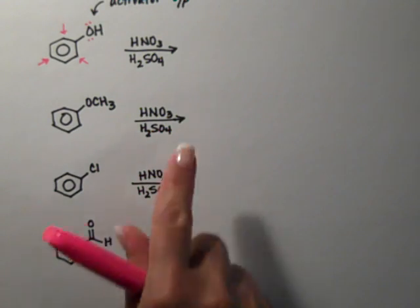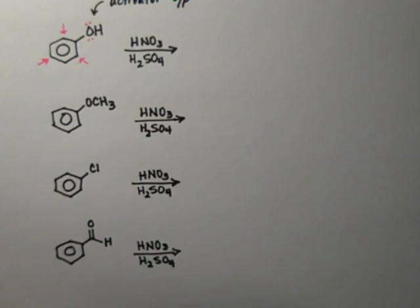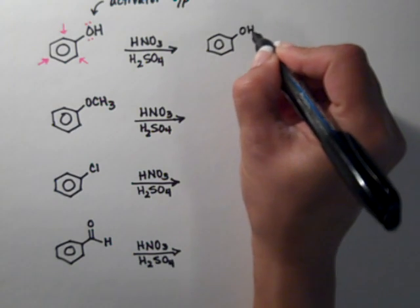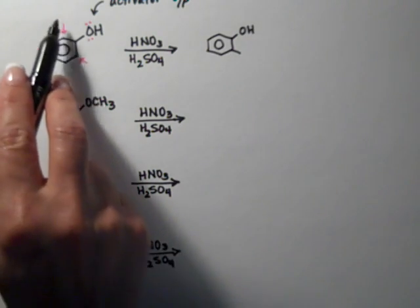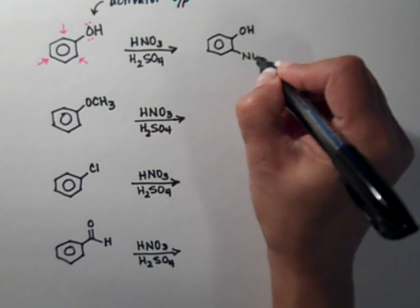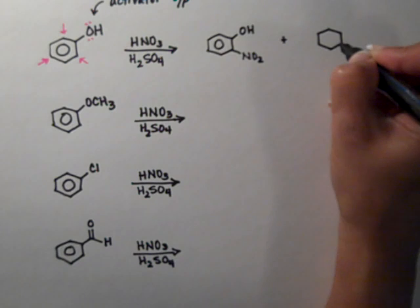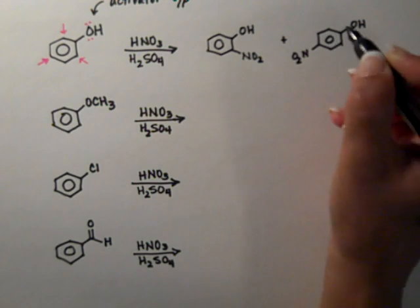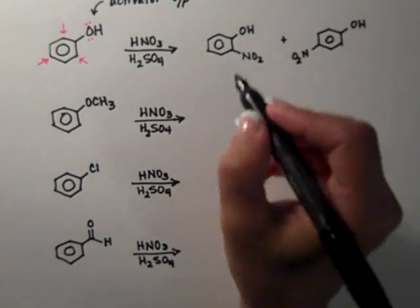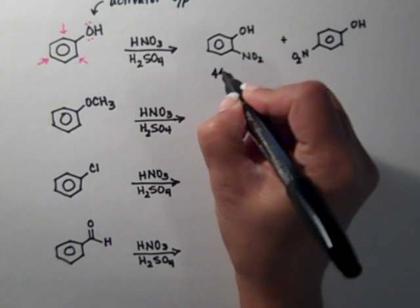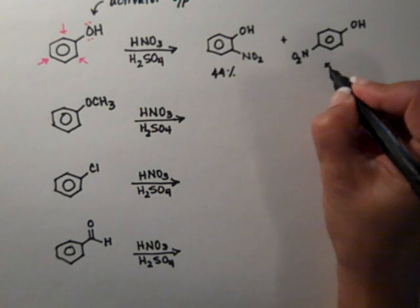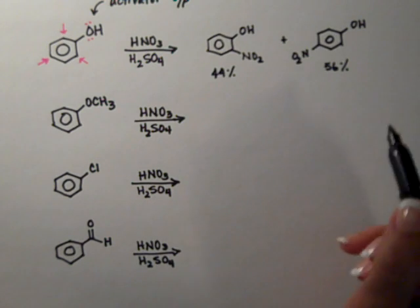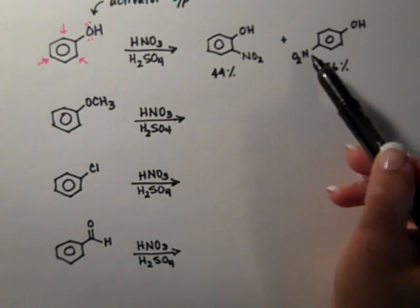So the next substituent that we put on the ring, in this case a nitro group, is going to go to the ortho and also to the para position. Here we're going to put it on the ortho, it doesn't matter which ortho you choose, they're the same. And we're also going to get the para. Those are our two products and we get the ortho product in 44% and the para product in 56%, and that would be because the nitro group occupies a little bit more space so it's easier to put it on the more open para position.